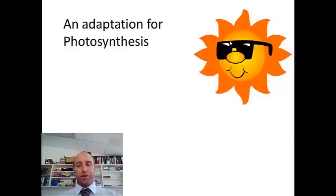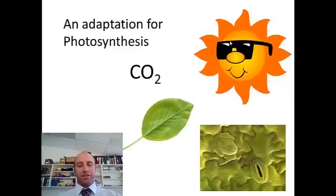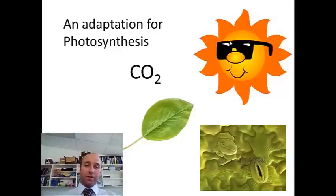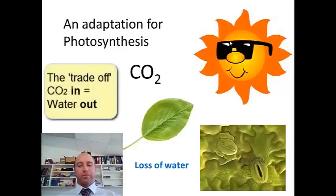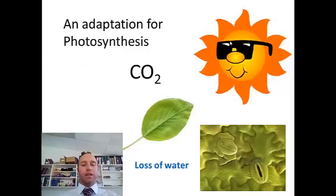Photosynthesis is all about the sun and capturing that light energy from the sun. We have a problem because carbon dioxide is needed for photosynthesis, and it gets in through the stomata in the leaves — through the tiny pores. When those stomata are open for the carbon dioxide to go in, we often have a loss of water through transpiration. The adaptations in photosynthesis are for the plants to get around this problem by adapting the chemical reaction that occurs.